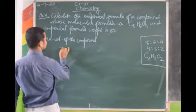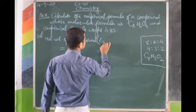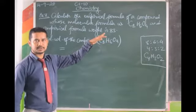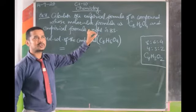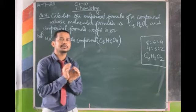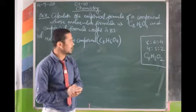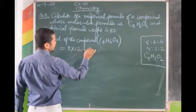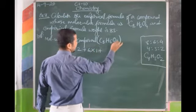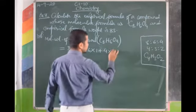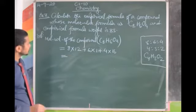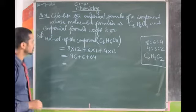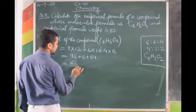First we find the molecular weight of the compound. The molecular formula is C8H6O4. Molecular weight = sum of atomic weights of all atoms. So: 8 × 12 (carbon) + 6 × 1 (hydrogen) + 4 × 16 (oxygen) = 96 + 6 + 64 = 166. This is the molecular weight.